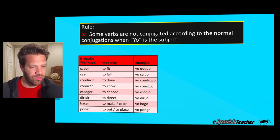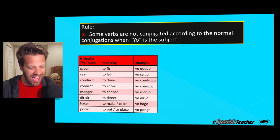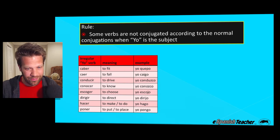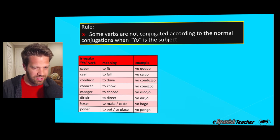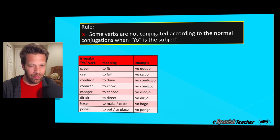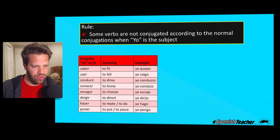The first irregular verb is "caber," which means to fit. The conjugation is "yo quepo" — I fit. It doesn't even sound like caber. Normally you'd drop the -er, know the subject is yo, add an -o to get "cabo" — but cabo is not right. Next, "caer" means to fall: yo caigo. Then "conducir" means to drive: yo conduzco.